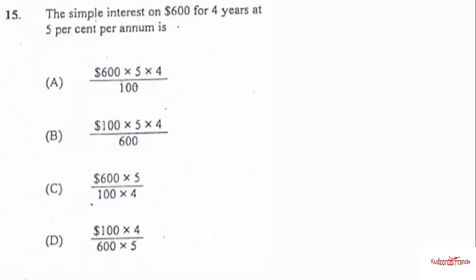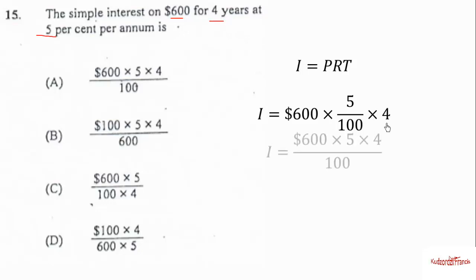The simple interest on $600 for four years at 5 percent per annum is - we know the simple interest formula is simple interest equals principal times rate times time. The principal is 600, the rate is 5 percent, the same as 5 out of 100, then the number of years is four years. So the correct answer will be 600 times 5 times 4 over 100, option A.